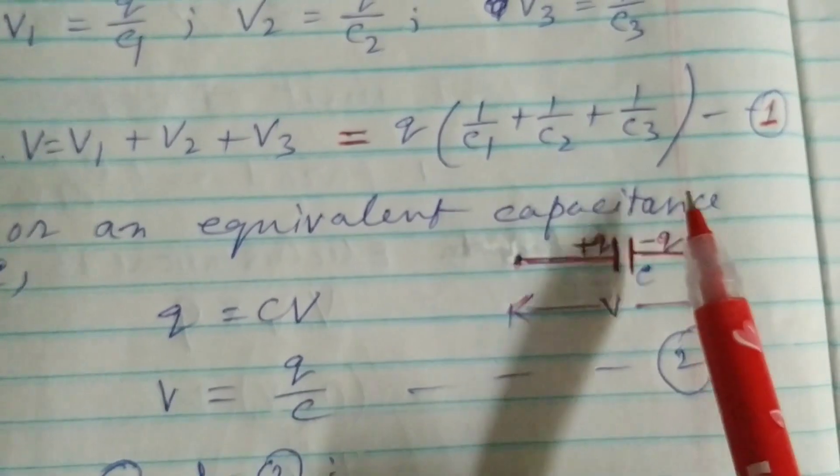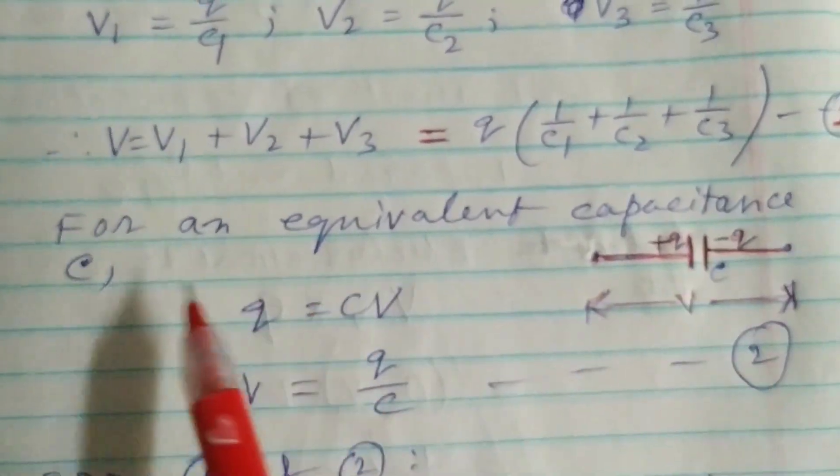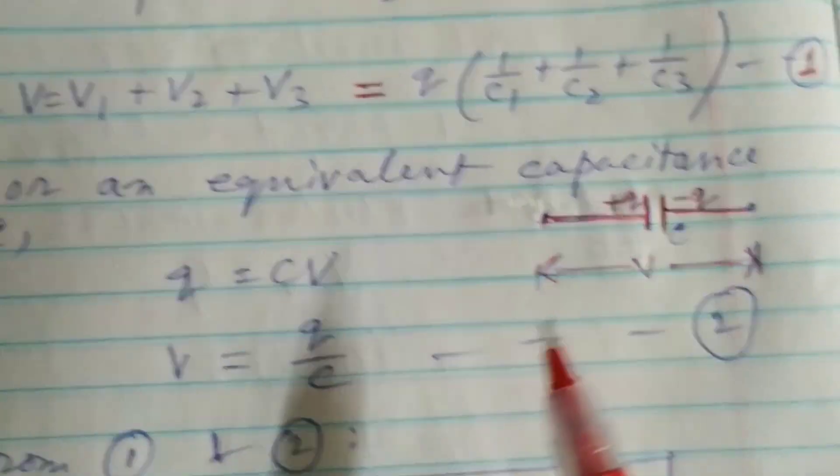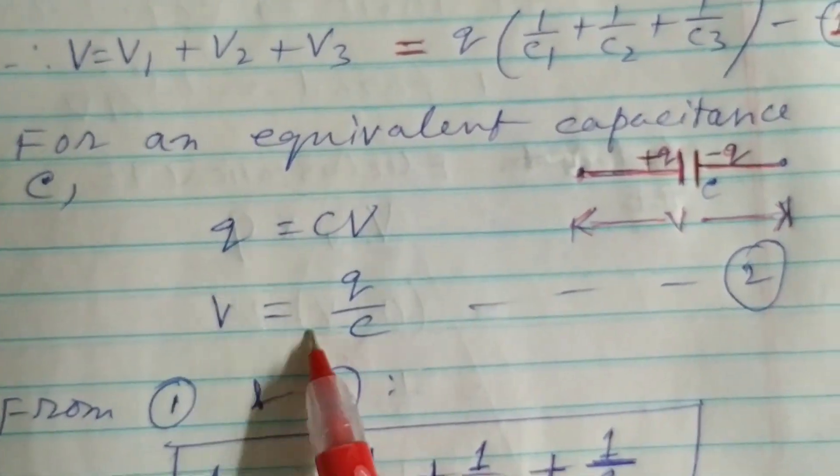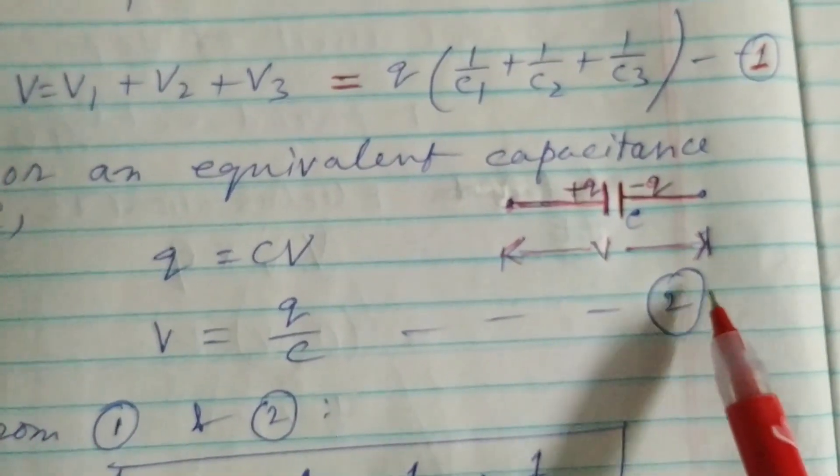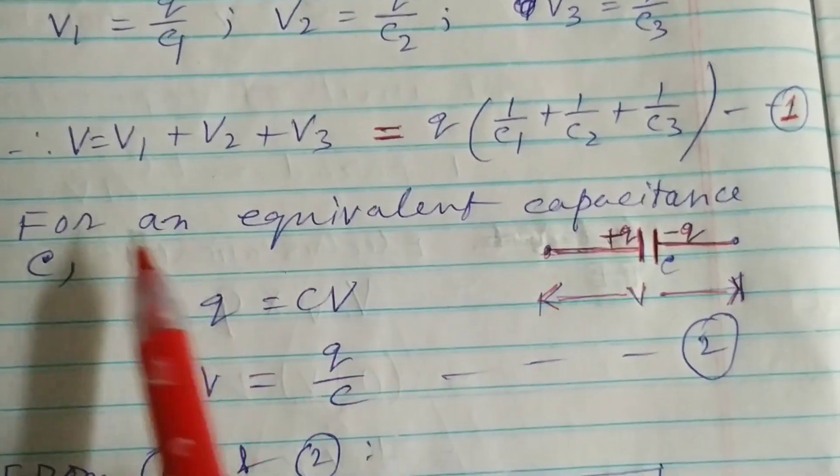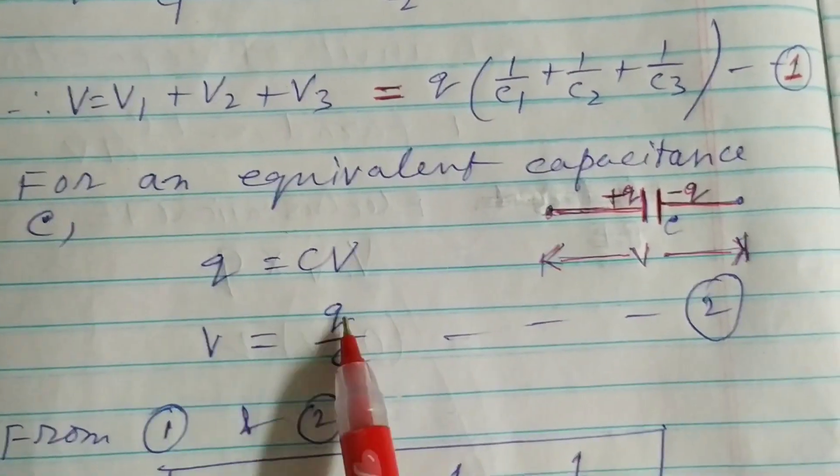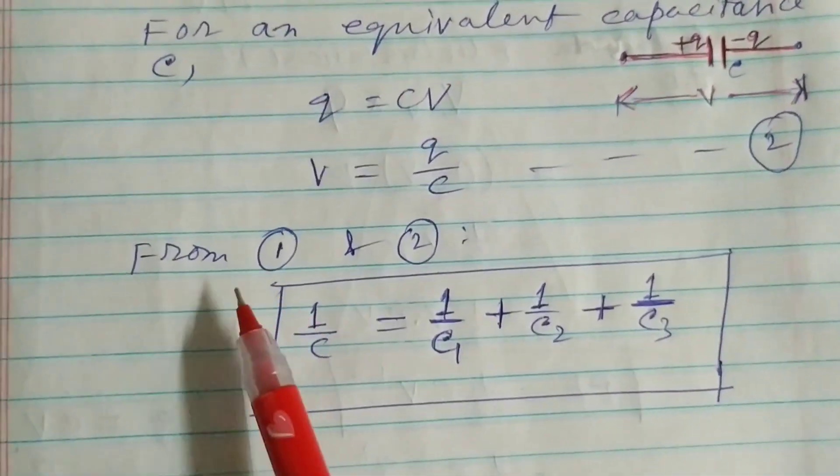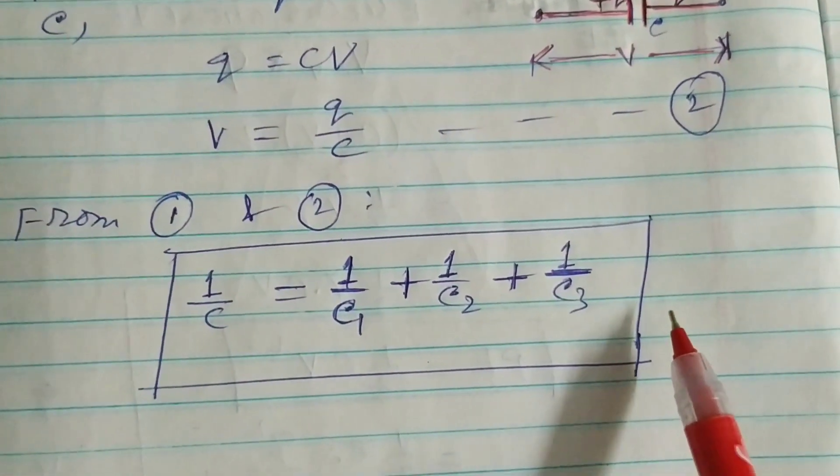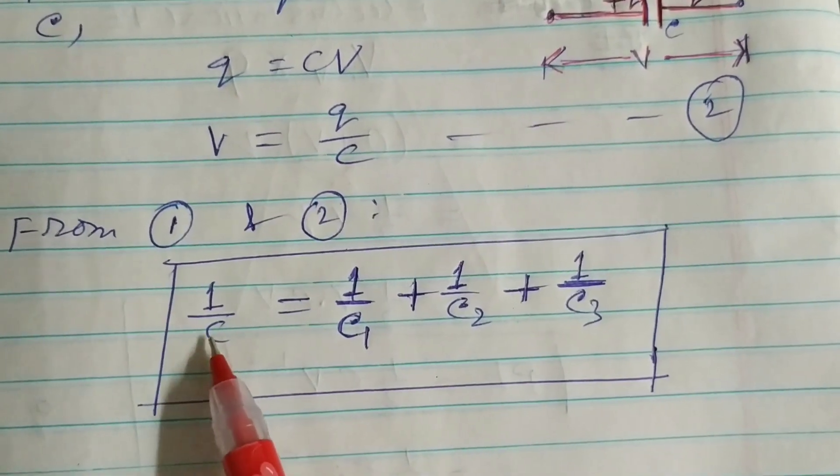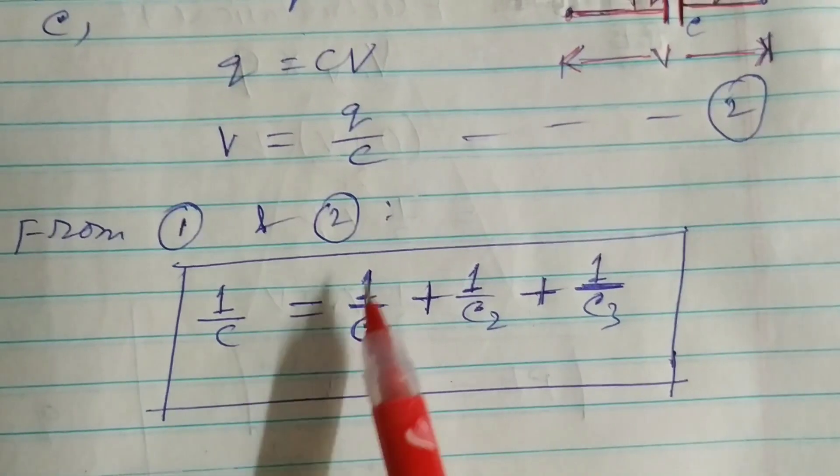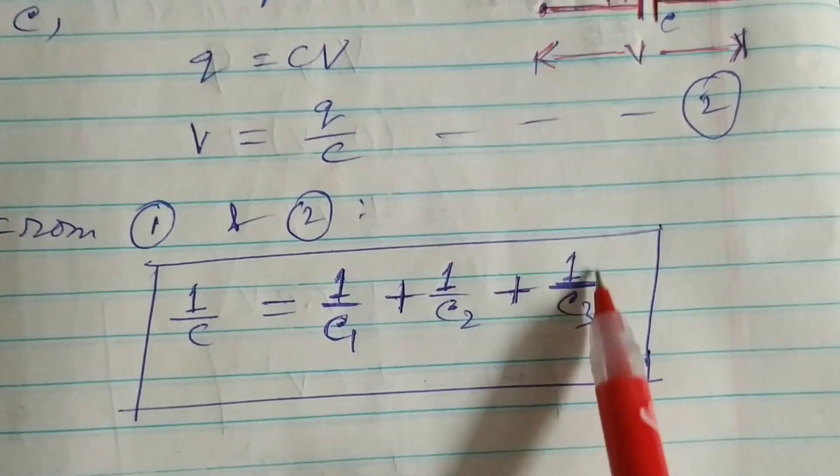Now for an equivalent capacitor having capacitance C, this will be plus Q minus Q, C and V. So Q equals CV, so V equals Q by C. Now this is equation number 2. From 1 and 2, if I compare, then V equals Q into this and here V equals Q by C. Therefore from 1 and 2, C is the equivalent capacitance and 1 by C equals 1 by C1 plus 1 by C2 plus 1 by C3.